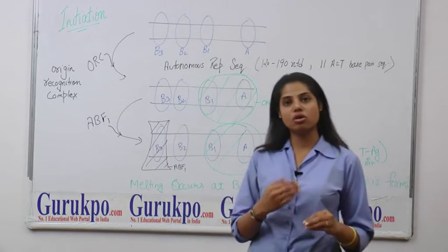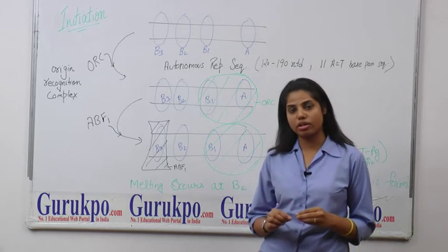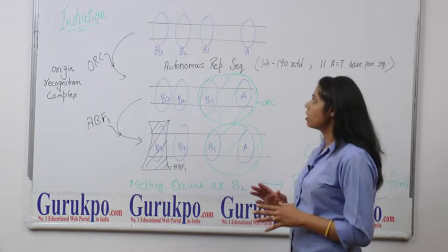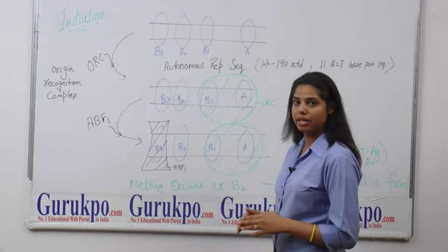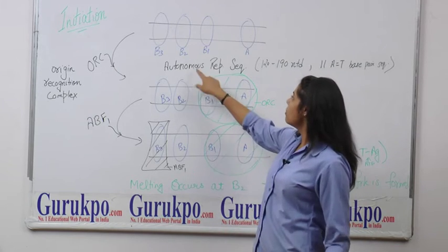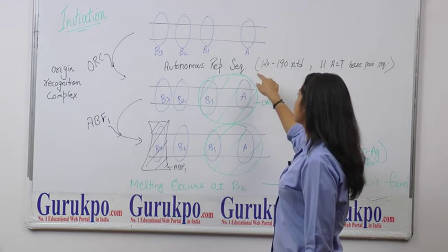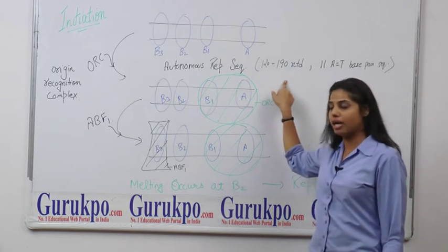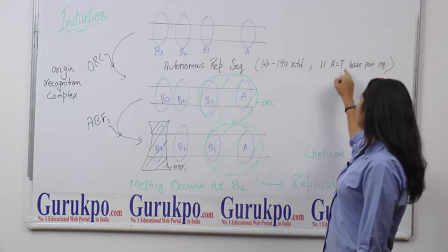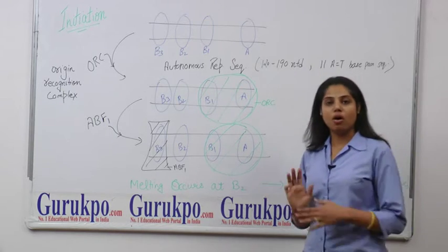Initiation actually starts on origin of recognition complex. The ori of eukaryotic replication is autonomous replication sequences. This autonomous replication sequences consists of 120 to 190 nucleotides in which 1180 base pair sequences are observed.